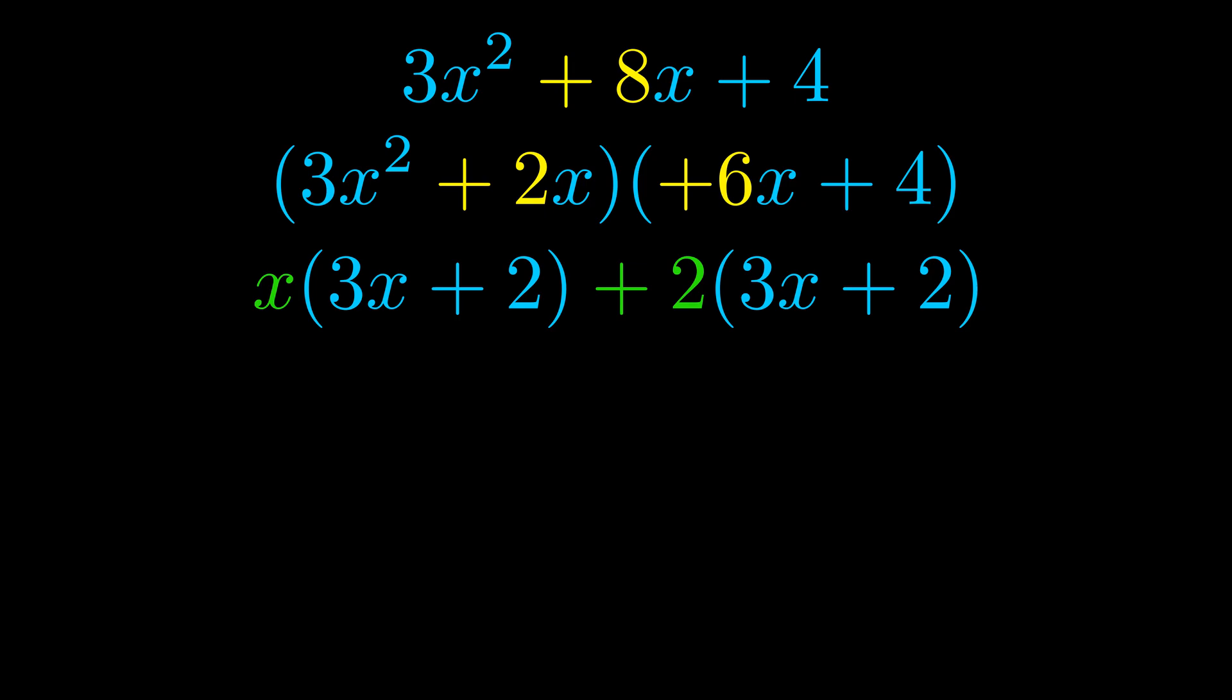Notice also how what remains inside of the parentheses is the same in both cases. The blue values are the same. Those blue values will become one of our factors, and we will combine the two green values, the GCFs that we pulled out, to get the other one. And that is our fully factored equation.